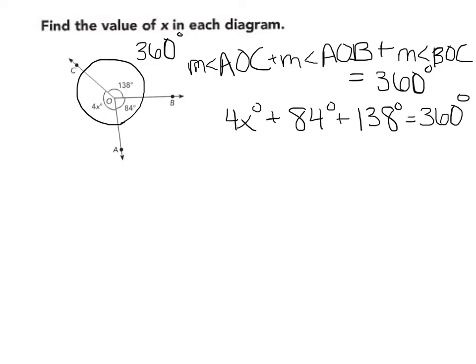Now we have to simplify. So we are going to combine these two. 84 plus 138 gives us 222. We can rewrite all the other information that we have here.